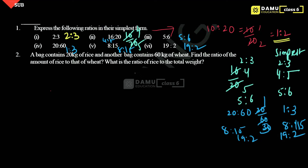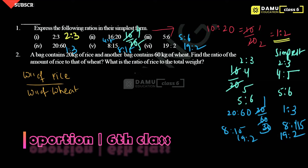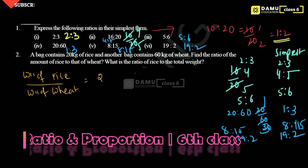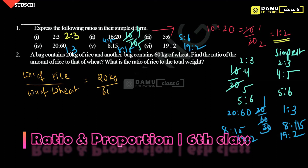Next question: a bag contains 20 kg of rice and another bag contains 60 kg of wheat. Find the ratio of the amount of rice to the amount of wheat. So weight of rice is 20 kg and weight of wheat is 60 kg. That gives 20 by 60 — 20 ones are 20, 20 threes are 60 — so the ratio is 1:3.